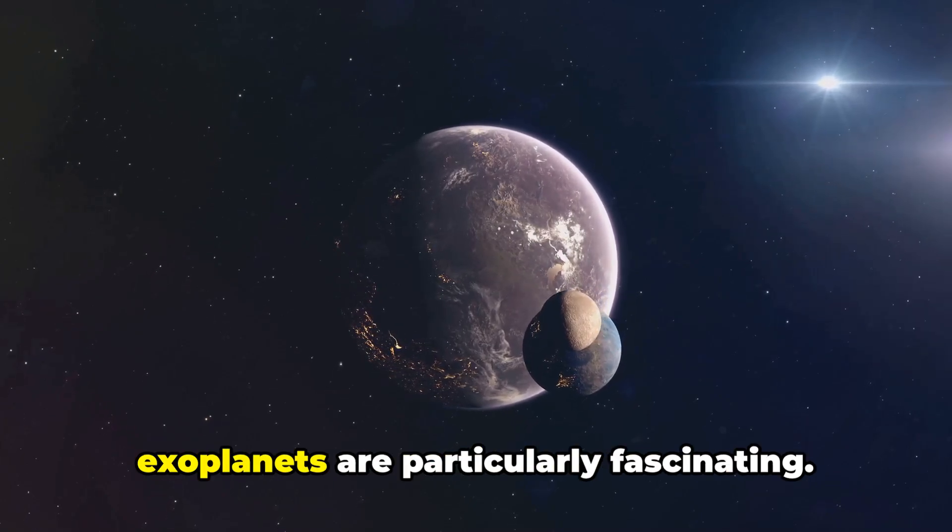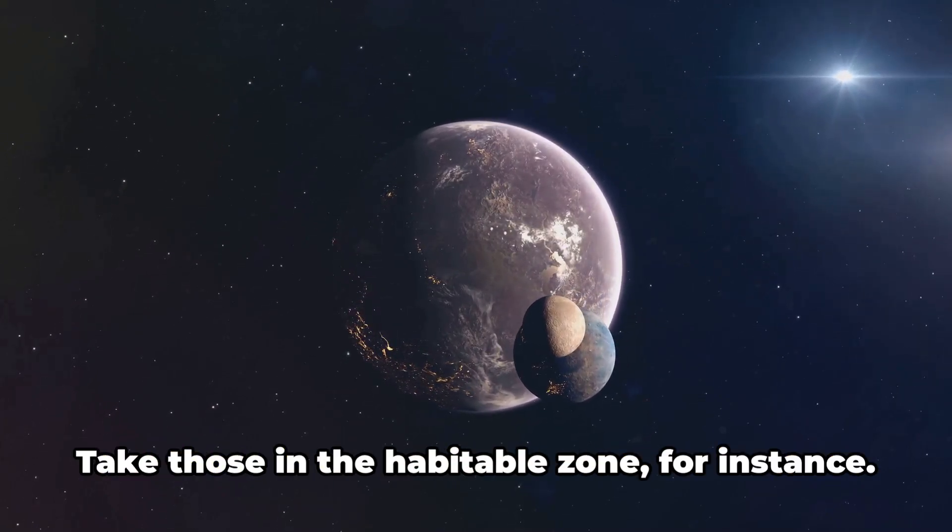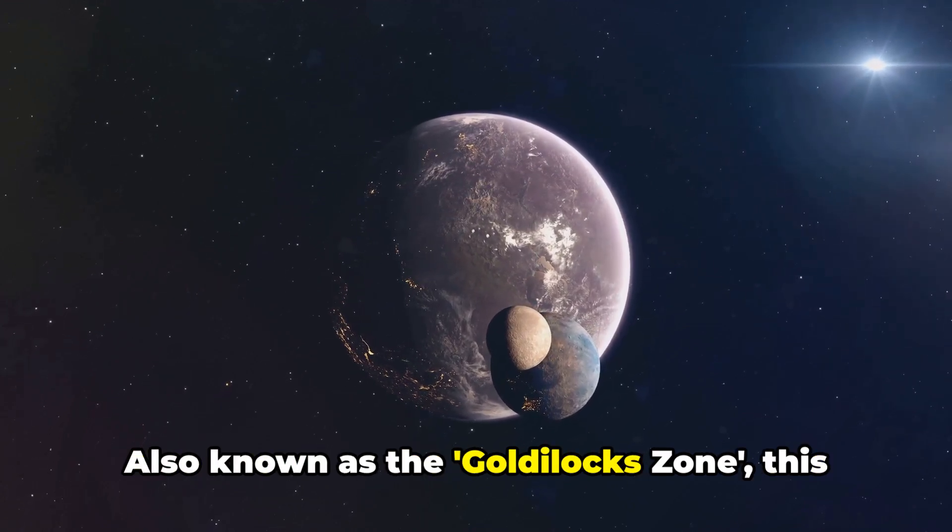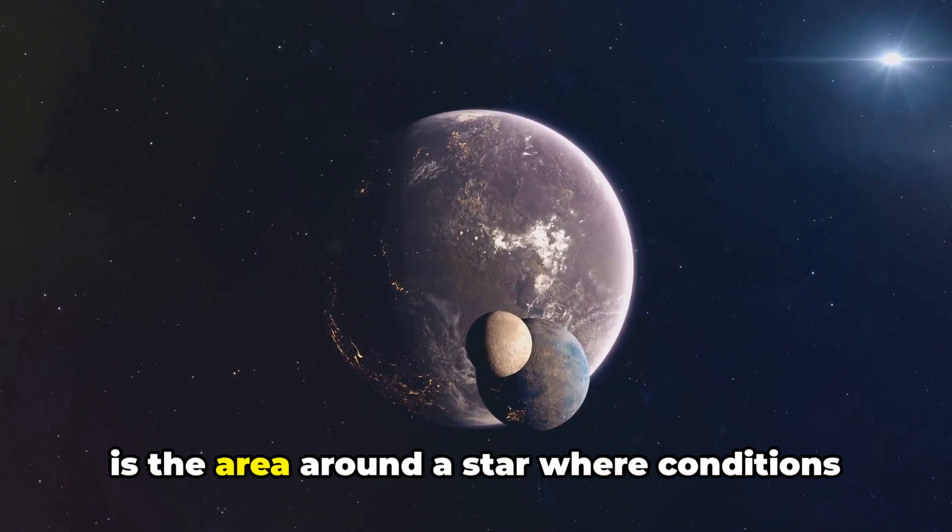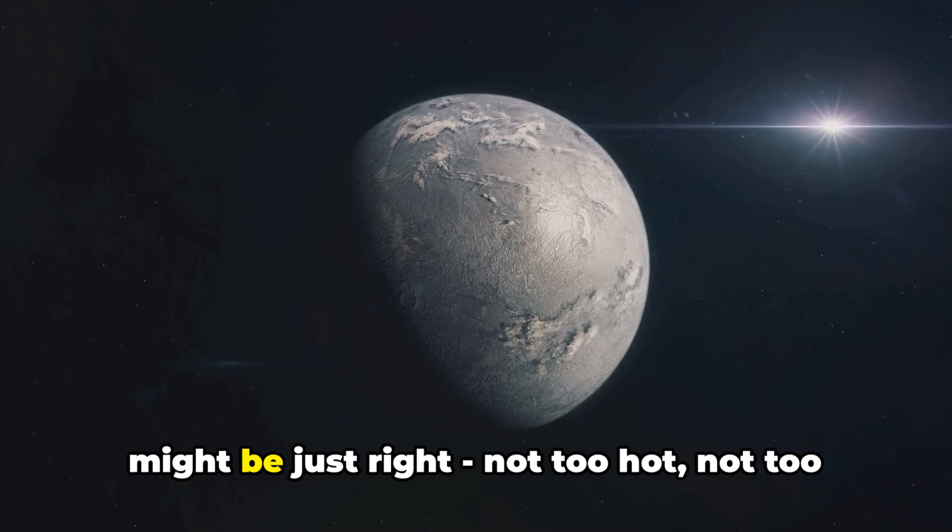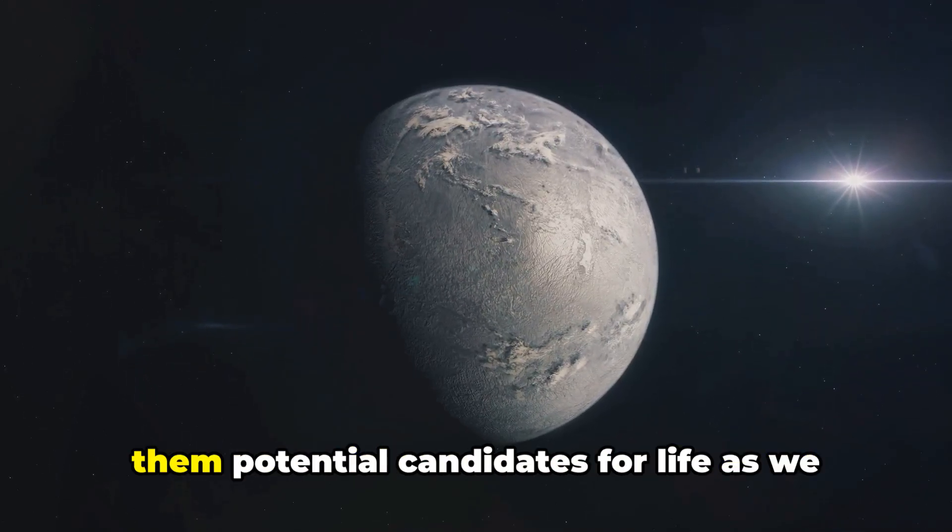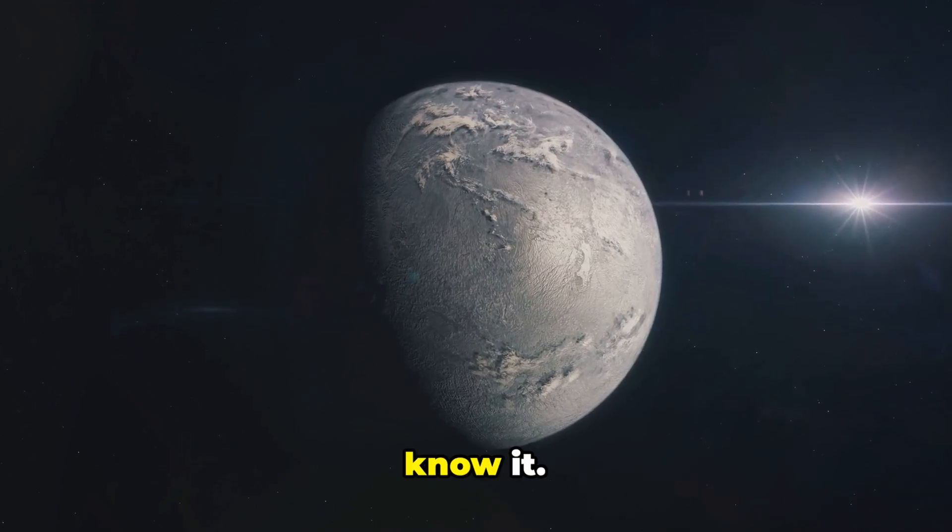Among the thousands discovered, some exoplanets are particularly fascinating. Take those in the habitable zone, for instance. Also known as the Goldilocks zone, this is the area around a star where conditions might be just right, not too hot, not too cold, for liquid water to exist, making them potential candidates for life as we know it.